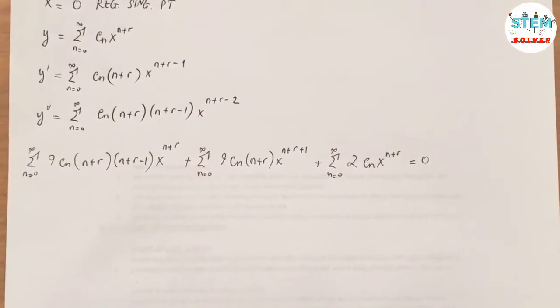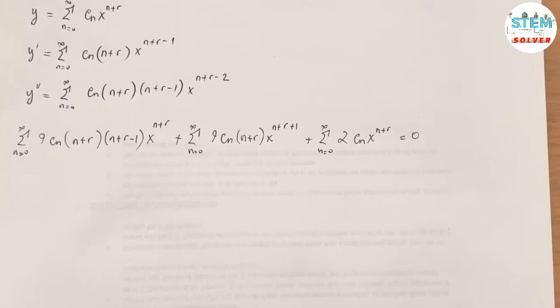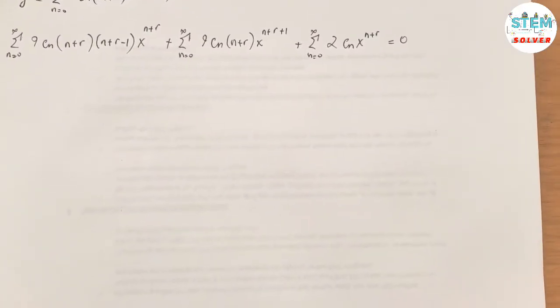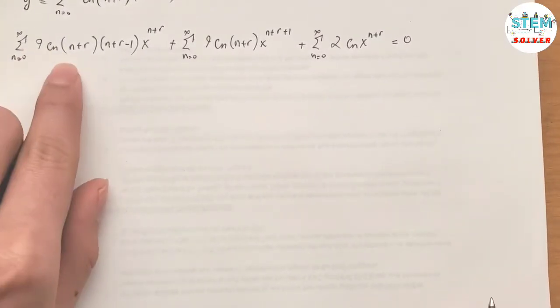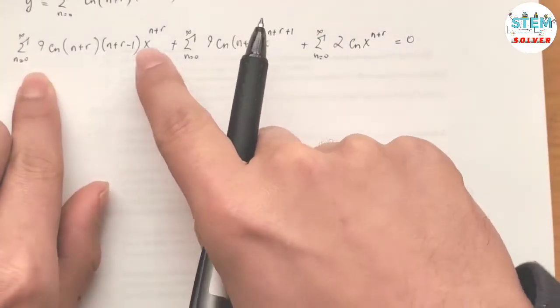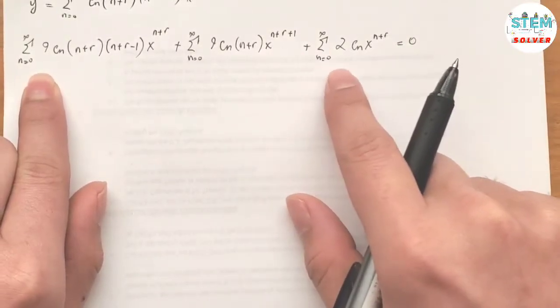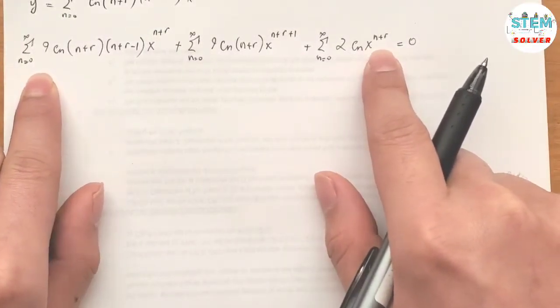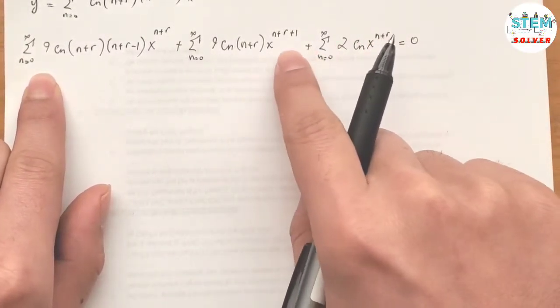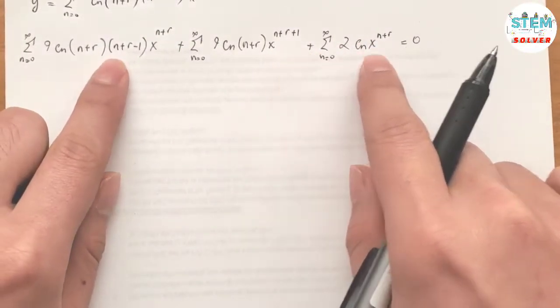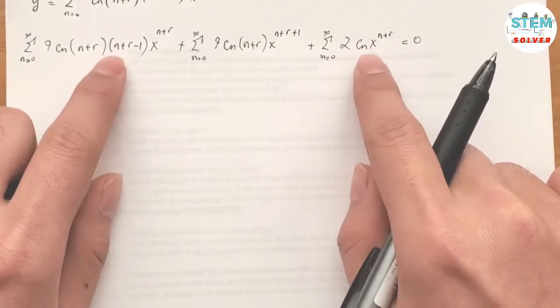Now we look at the lowest powers. At n=0, the first series gives x^r, the second gives x^(r+1), and the third gives x^r. Since x^(r+1) is the highest exponent, I need to run out a term for the first and third power series.